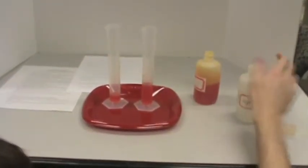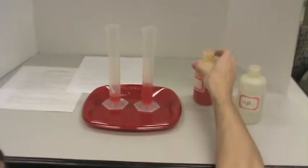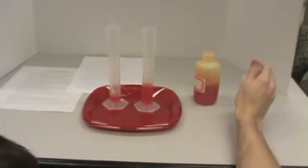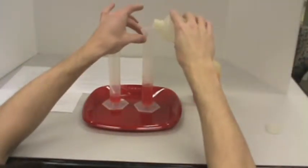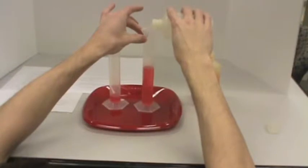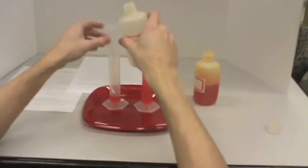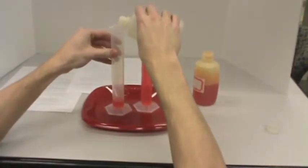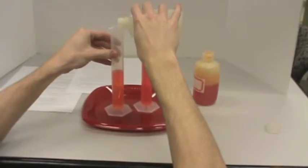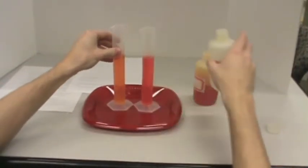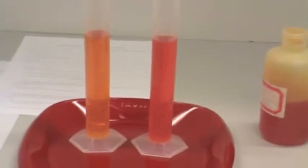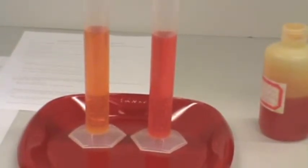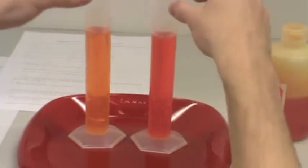Fill both graduated cylinders to the 100ml mark with water. Hold the graduated cylinders up so students can see the difference in the intensity of the red coloring.